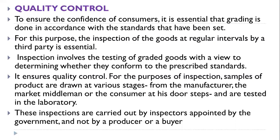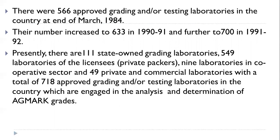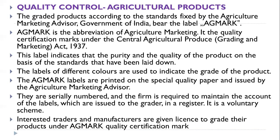Inspections are not carried out by the producer or buyer. There were 566 approved grading and public testing laboratories in the country at the end of March 1984. Their number increased to 633 in 1990-91 and further to 700 in 1991-92. Presently there are 111 state-owned grading laboratories, 549 laboratories of licensees (private packers), 9 laboratories in the cooperative sector, and 49 private and commercial laboratories — a total of 718 approved grading and testing laboratories engaged in analysis and determination of AGMARK grades.